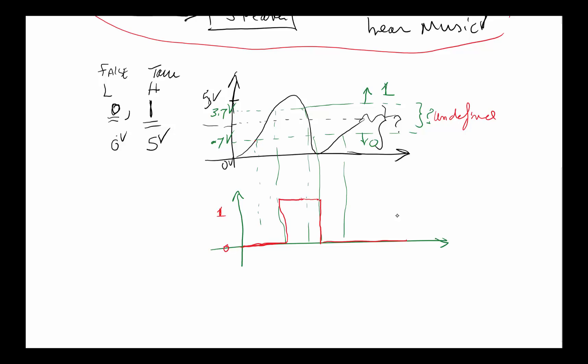And at this point, since this signal never made it above 3.7, it's going to stay at zero. So that's how they got around this problem of noise in the undefined region. If it's wobbling back and forth, you're not going to get a lot of zeros and ones. So this analog signal got translated to this digital system.